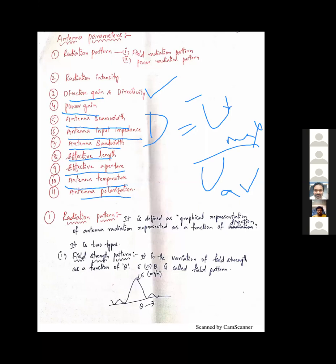Front-to-Back Ratio (FBR) is defined as the ratio of power radiated in the desired direction to power radiated in the opposite direction. FBR has no units.